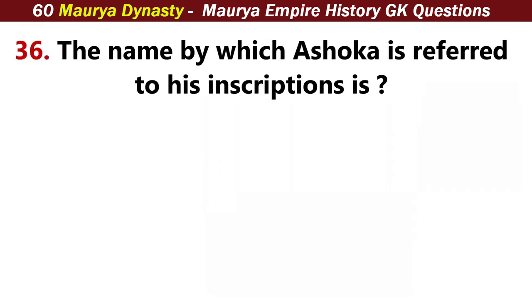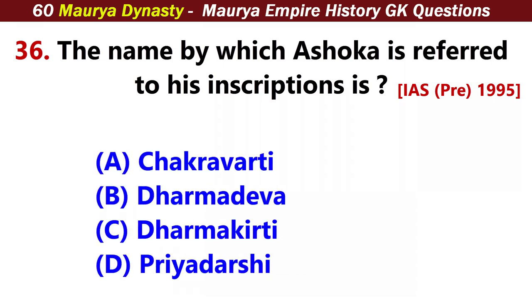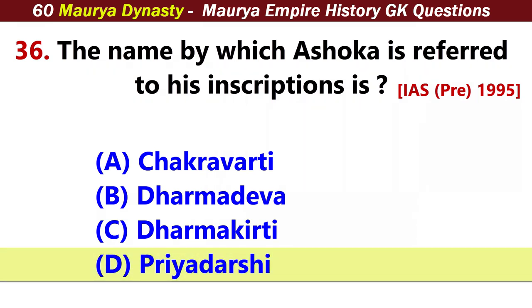The name by which Ashoka is referred to in his inscriptions is? Answer D: Priyadarshi.